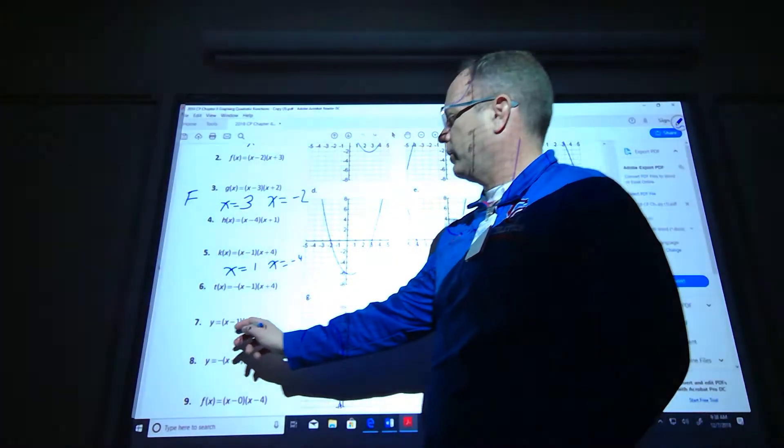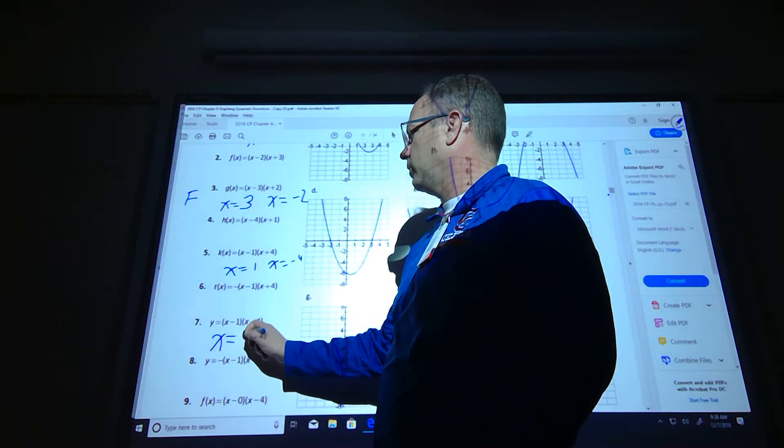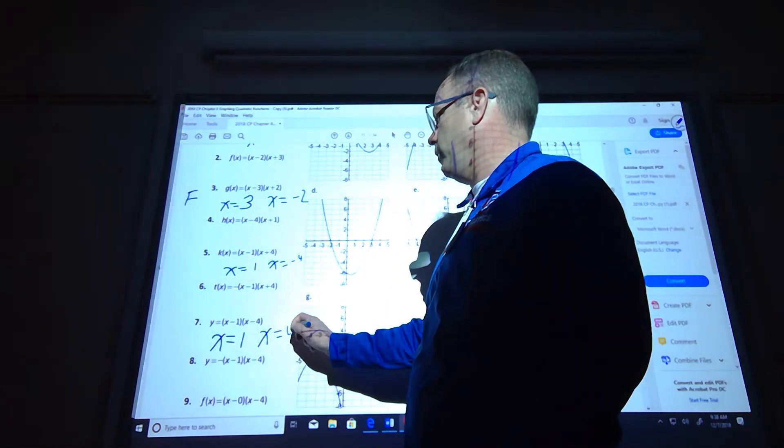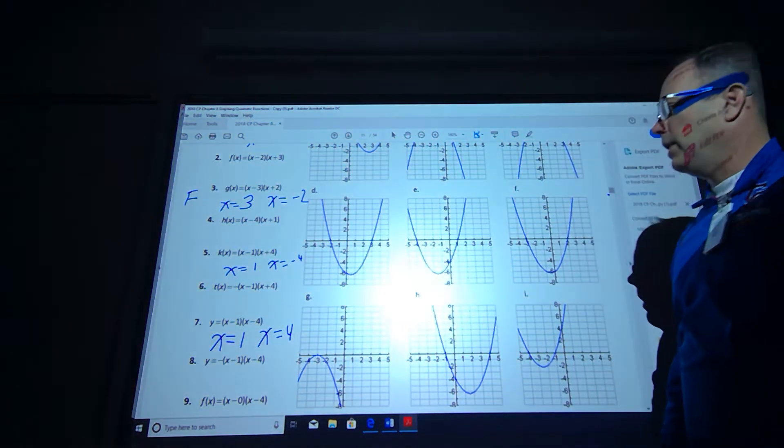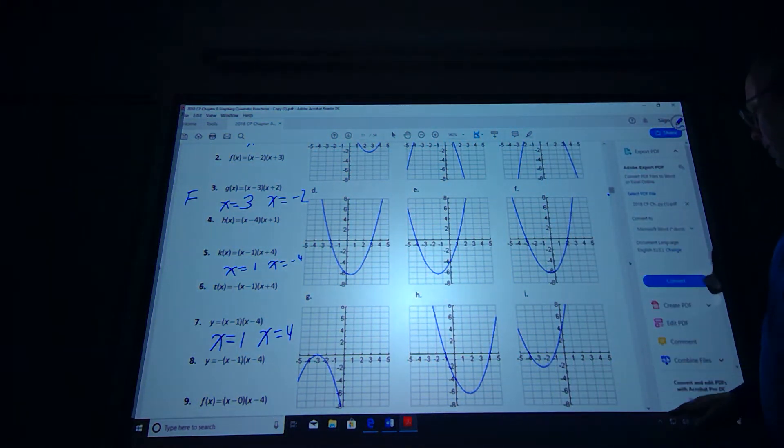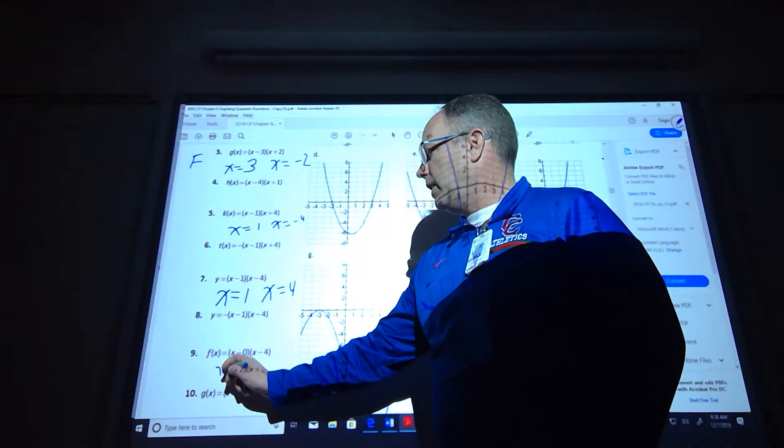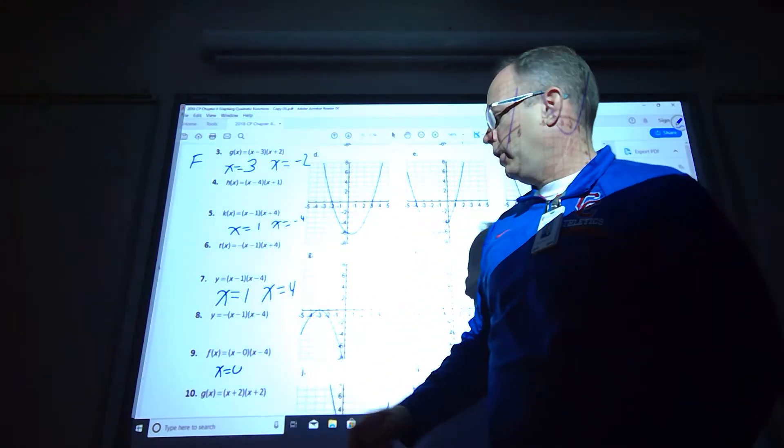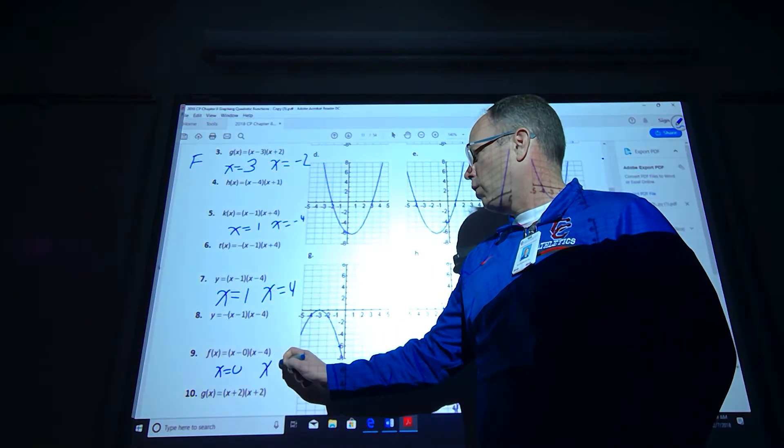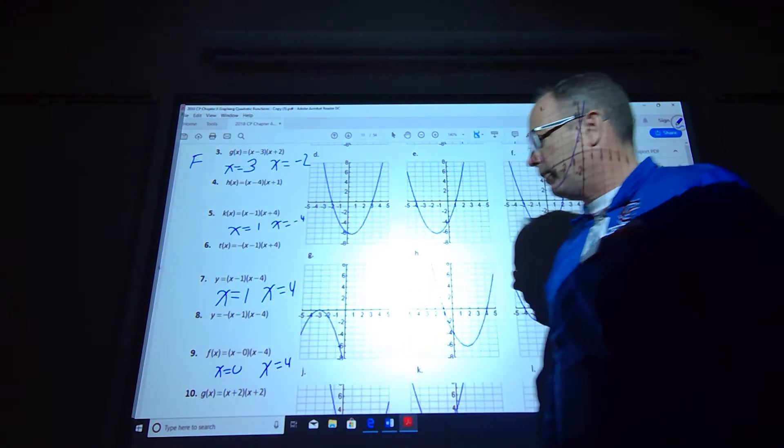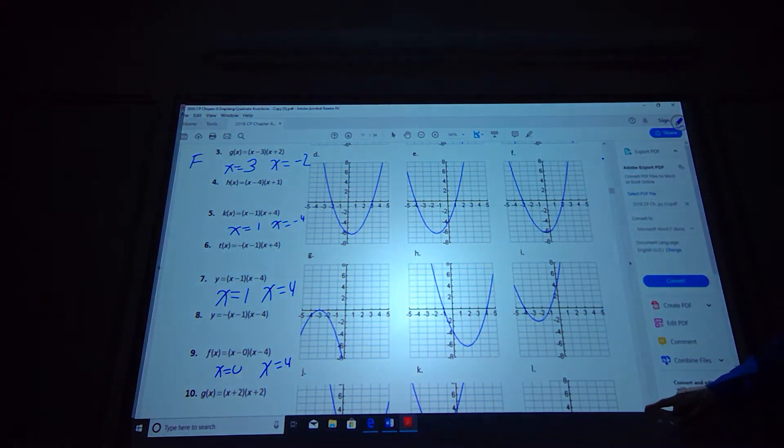Number 7 is going to cross the x-axis at positive 1 and also at positive 4, and it opens up. So find that one that crosses the x-axis. Number 9, this is going to cross at x equals 0, so it goes right through the origin, and then this one's going to cross at 4. It opens up because I have positive out front, so find the graph that works out with that one.